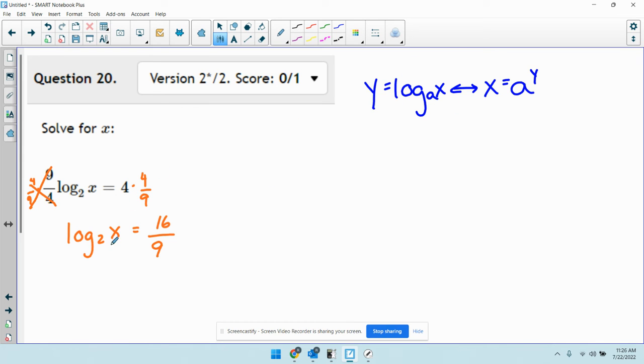So now I can convert. I am here. My a is 2. x is x. y is 16 over 9. So when I convert, the x comes to its own side. I'm left with 2 raised to the power of 16 over 9.